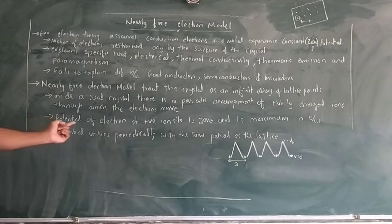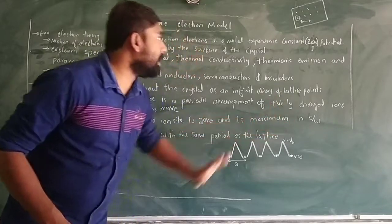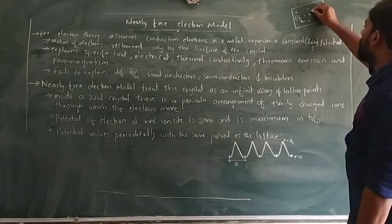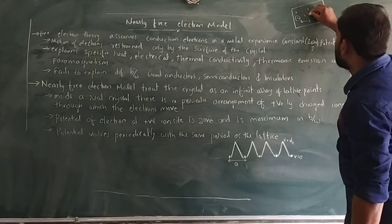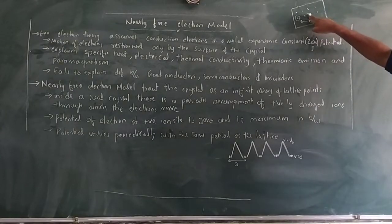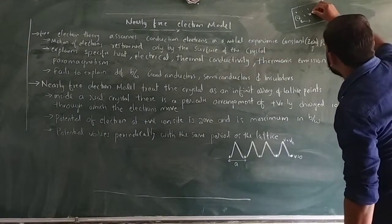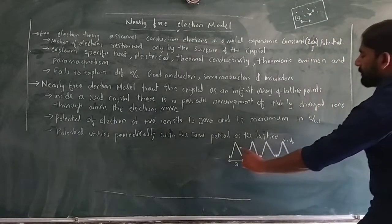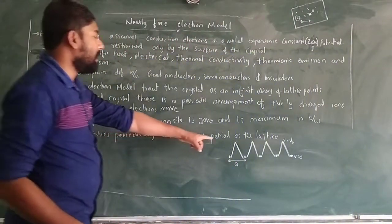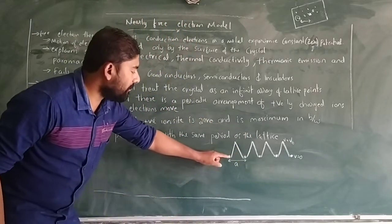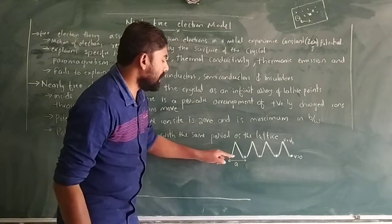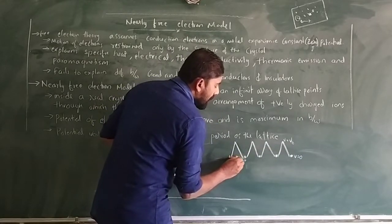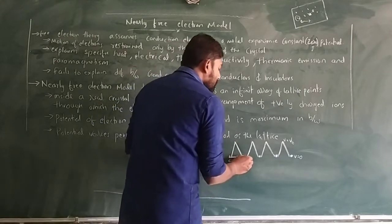The potential of an electron near a positive ion site is zero and maximum in between. When an electron comes near a positive ion site, it gets attracted and experiences minimum potential energy. As it moves away from the positive ion site, the attractive force acts on it, and the potential is high — we can take it as V₀. The potential varies periodically with the same period as the lattice. Moving from one ion site, the potential slowly increases, reaches a maximum in the middle, and then decreases at the next ion site.